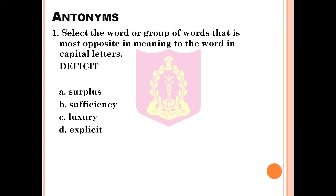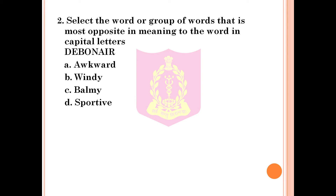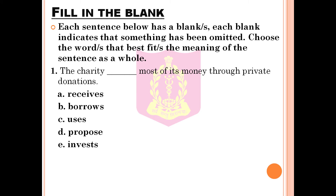Question number 1 under Antonyms: Select the word most opposite in meaning to DEFICIT. Option A: Surplus. Option B: Sufficiency. Option C: Luxury. Option D: Explicit. The correct answer is Option A, Surplus. Question number 2: Select the word most opposite in meaning to DEBONAIR. Option A: Awkward. Option B: Windy. Option C: Balmy. Option D: Sportive. The correct answer is Option A, Awkward.